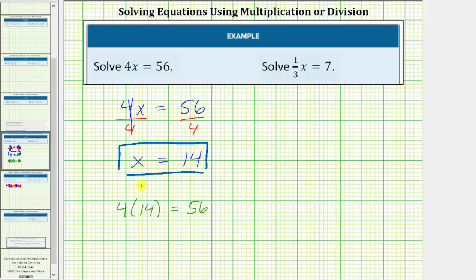And 4 times 14 does equal 56. So we have 56 equals 56, which is true, which verifies our solution is correct.